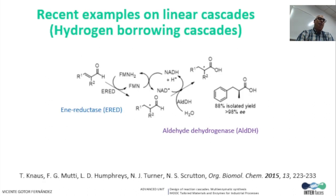Finally, the importance of cofactor recycling is illustrated in the last example, consisting of a first reductive step using an ene-reductase followed by oxidation of the resulting alcohol to form the corresponding carboxylic acid using an aldehyde oxidase. The redox equivalents required in the first reductive step are provided by the second oxidative step in the form of NADH. Therefore, a highly atom-efficient process is disclosed, even at semi-preparative scale, after optimization of both individual steps and a deep study of the hydrogen-borrowing biocatalytic cascade in terms of substrate and cofactor concentration and also enzyme loadings.